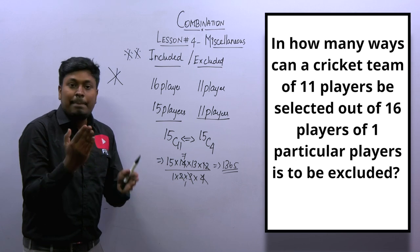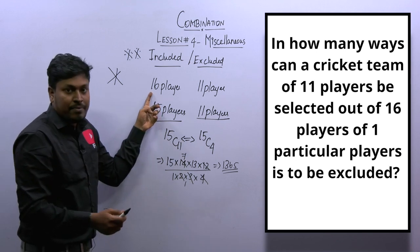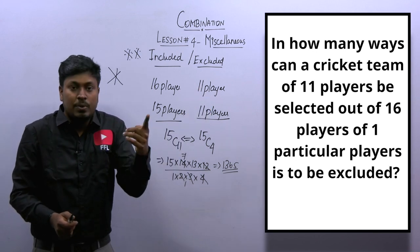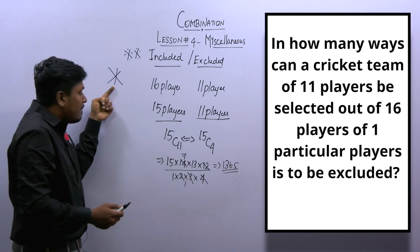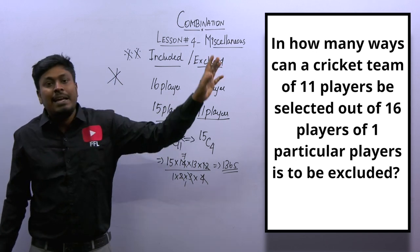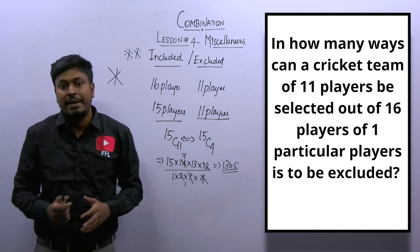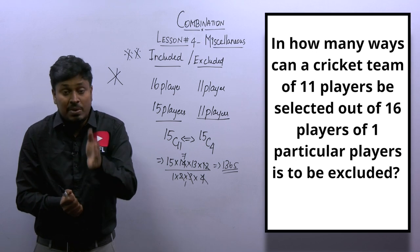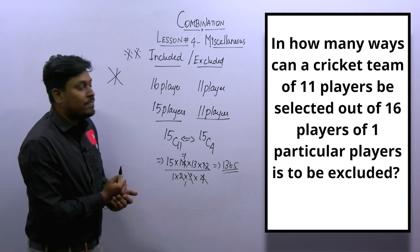The major difference between the previous question and this one: in question 5, a player is always included — so we subtract from both the total pool and the required count. In question 6, a player is excluded — eliminated from the selection list entirely. So from 16 players, removing 1 gives 15, and we still need to select 11 from those 15. That is the key difference between 'included' and 'excluded.'